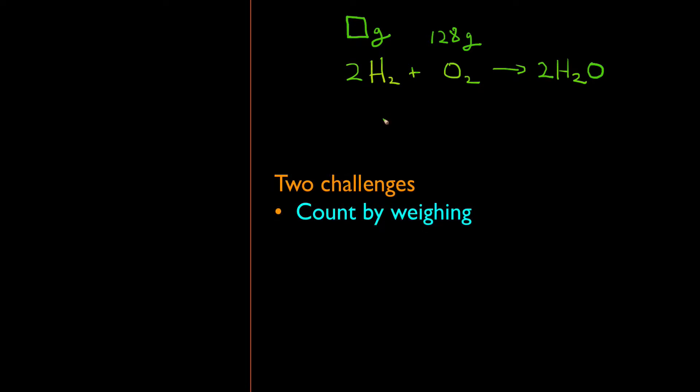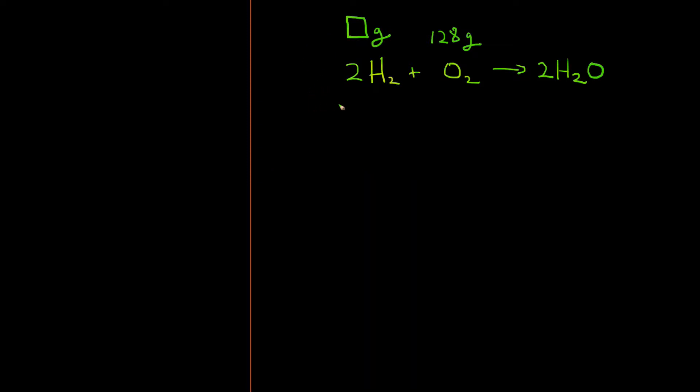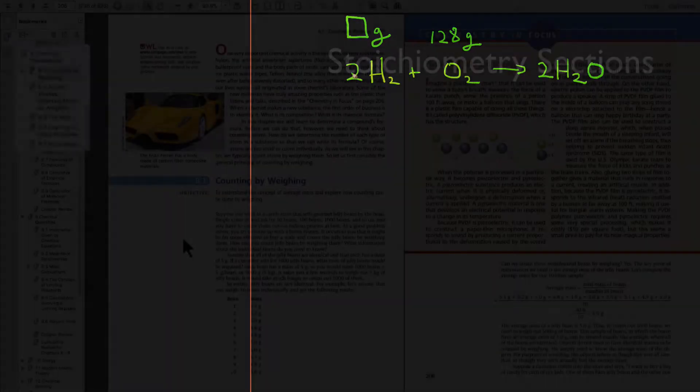To do that we need to be able to do at least two things. One, we have to be able to count by weighing. That is, in the real world we're only able to weigh things, however mother nature when she does a chemical reaction actually counts the number of items. The next thing is we have to scale things up a bit. Hydrogen molecules and oxygen molecules don't weigh very much, so we have to be able to scale them way up so that we can actually see those quantities on the gram level. All of this is covered in your textbook in chapters 8 and 9.